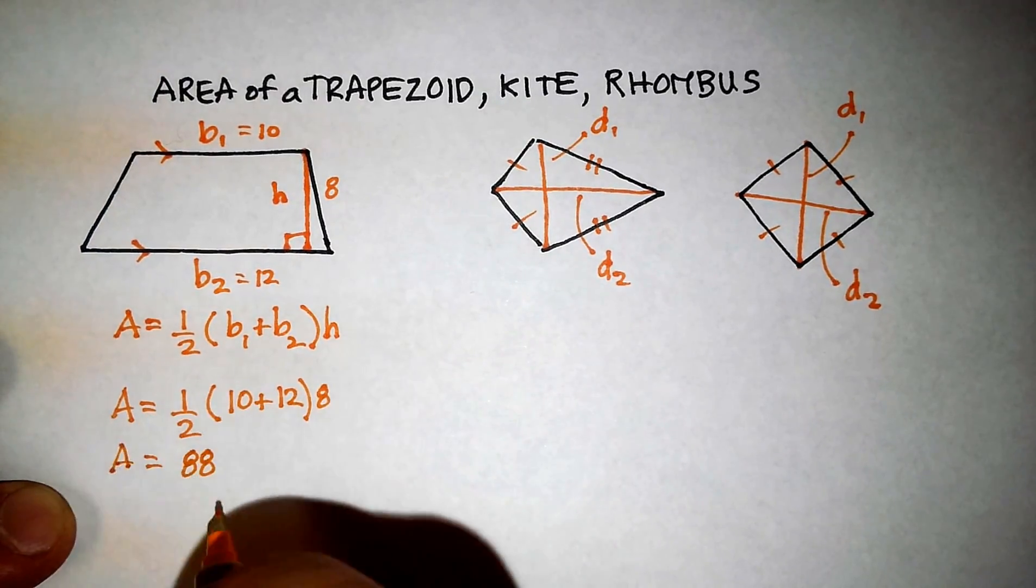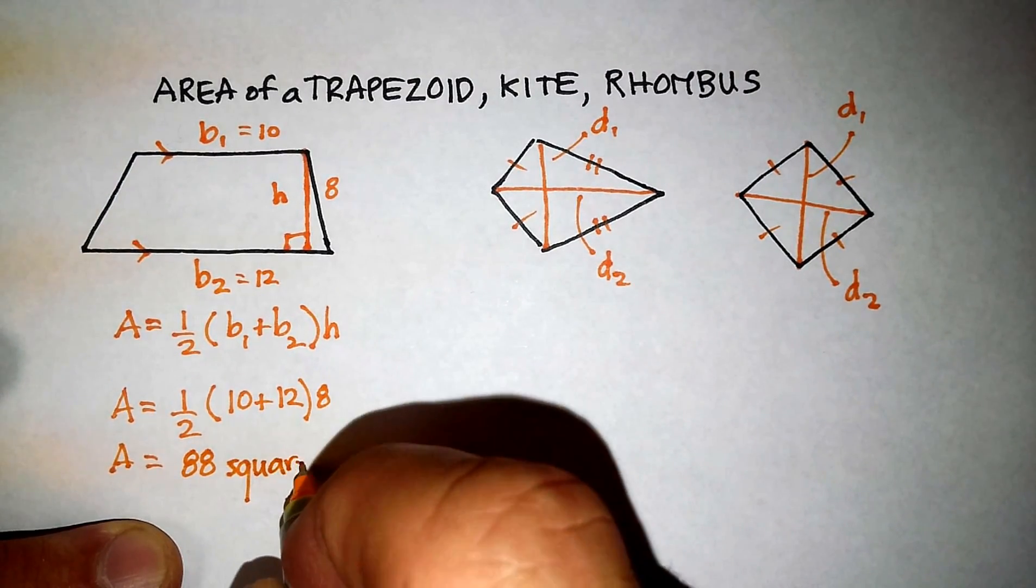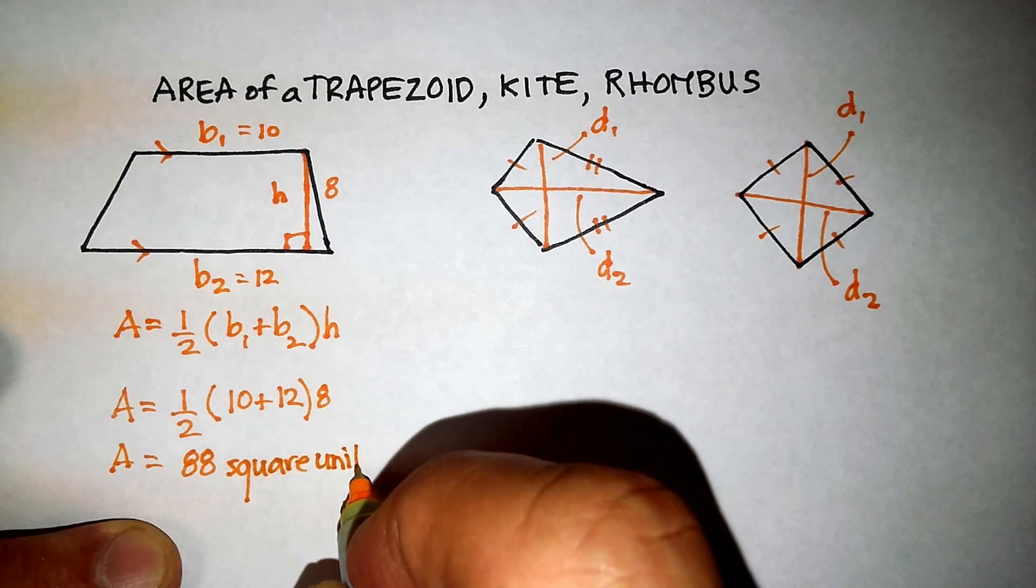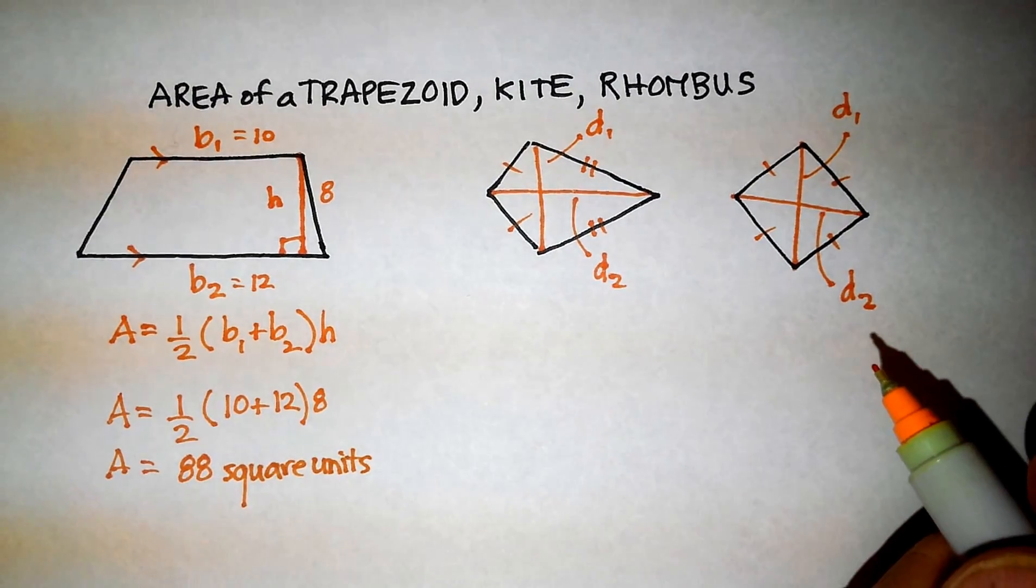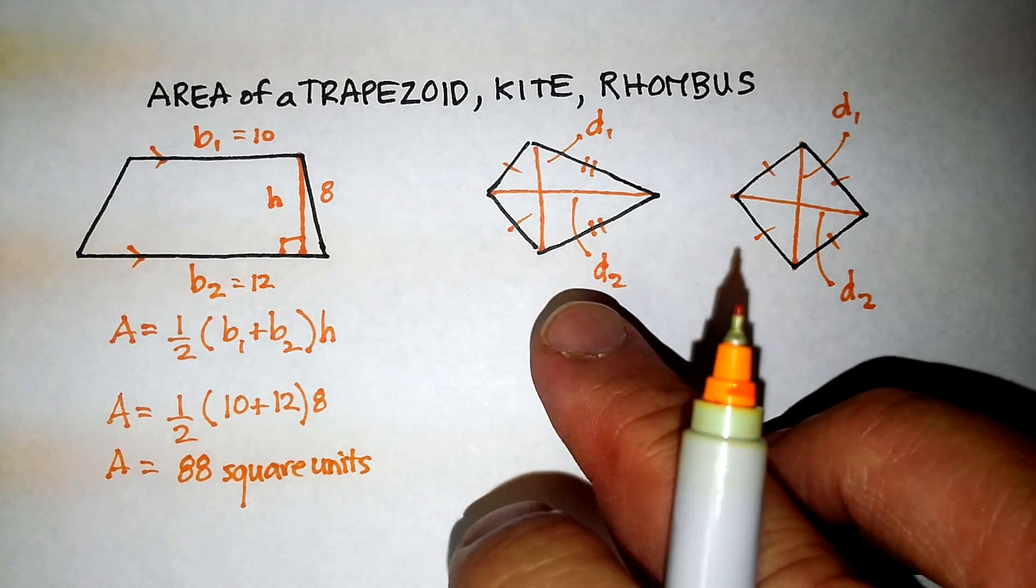So the area is going to be 88 square units, depending on what the units are. If it was inches, it would be square inches, et cetera. So, let's move now onto a kite.